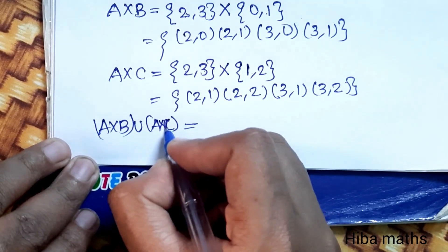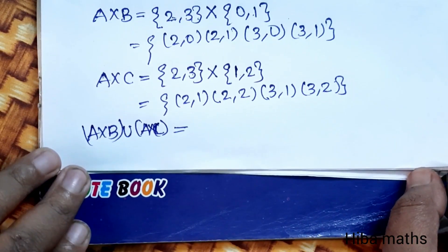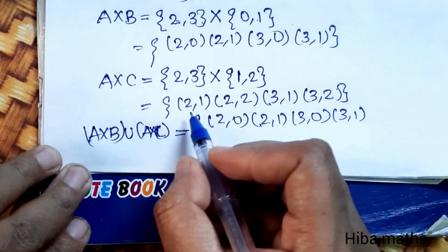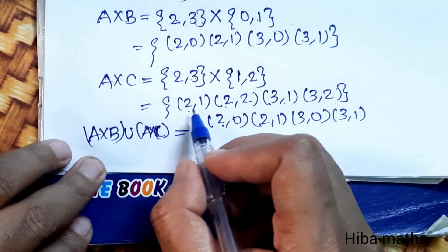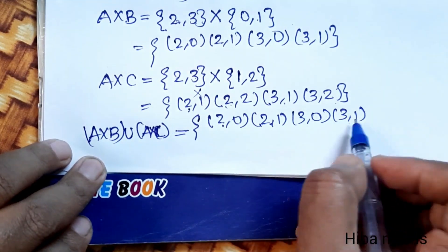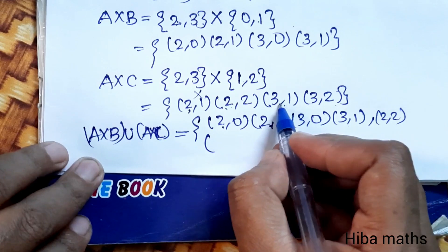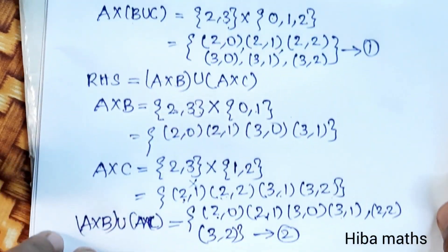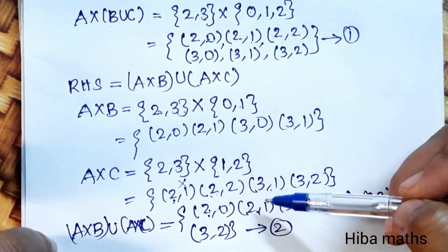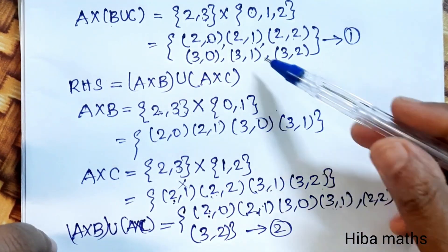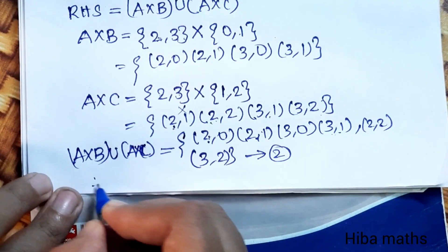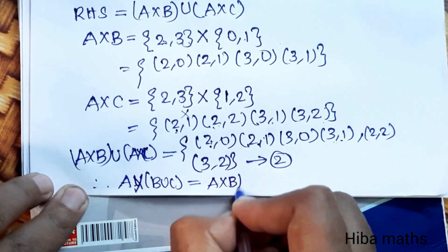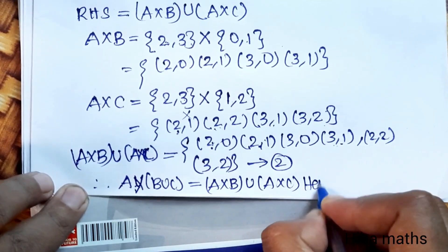Now A cross B union A cross C: taking the union of {(2,0),(2,1),(3,0),(3,1)} and {(2,1),(2,2),(3,1),(3,2)} gives {(2,0),(2,1),(2,2),(3,0),(3,1),(3,2)}. Therefore A cross (B union C) equals (A cross B) union (A cross C). Hence proved. Second question follows.